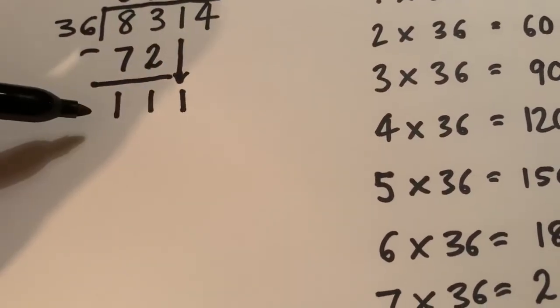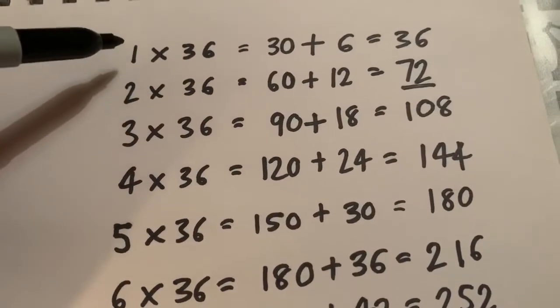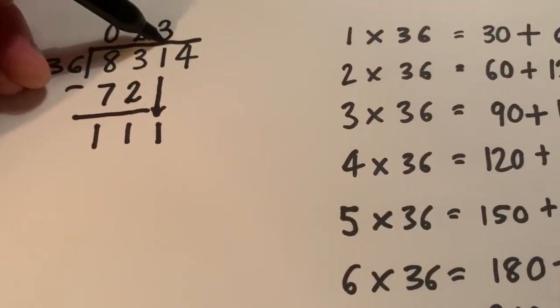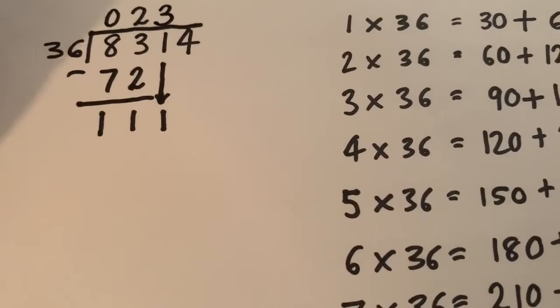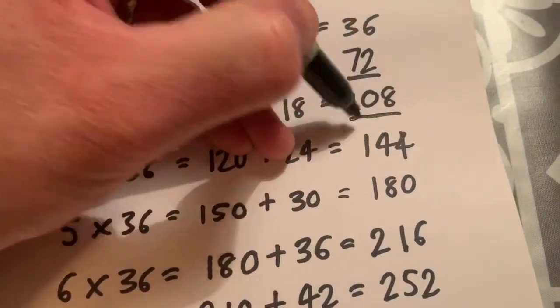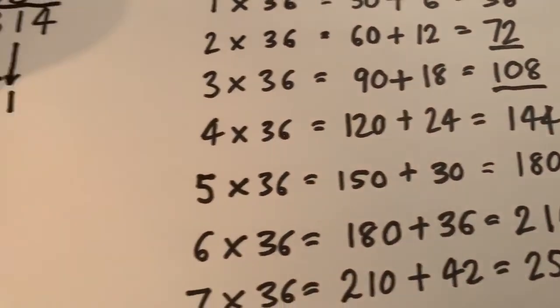So how many 36s go into 111? And we can see the answer to this one is going to be 3. Remember to put the answer on top of the bus stop first of all. Go back to my fact box. Underline the answer to 3 times 36 because it went in 3 times, 108.